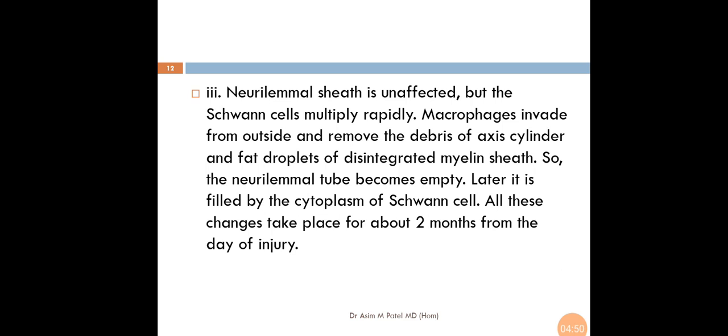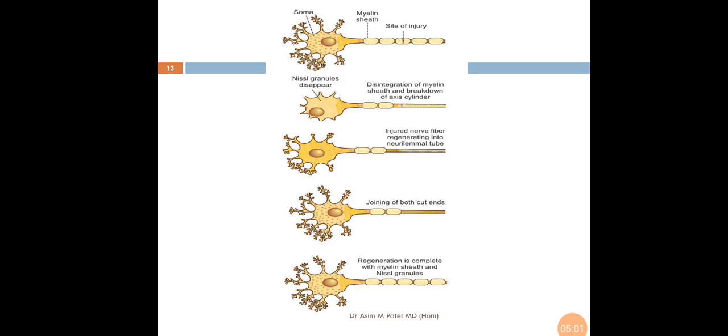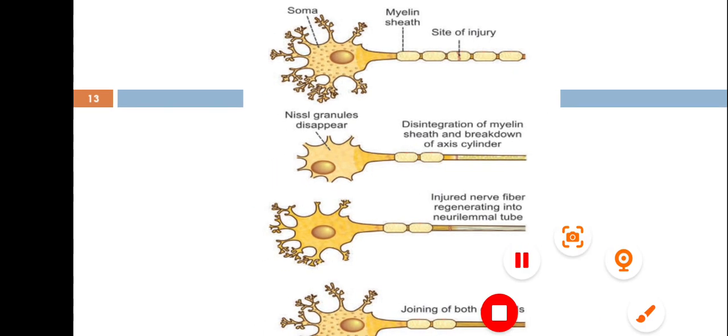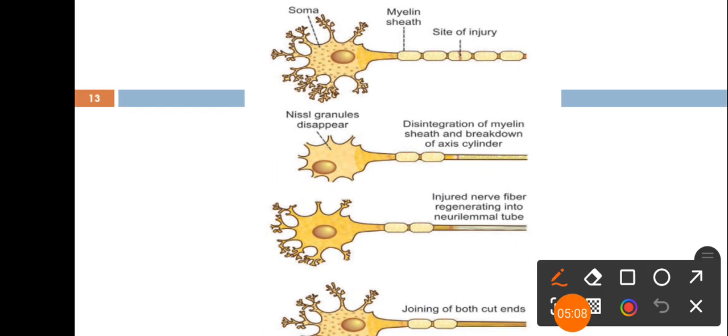The neurolemmal tube becomes empty. Later it is filled by the cytoplasm of Schwann cells. All these changes take place for about two months from the day of injury. In Wallerian degeneration, the changes which are occurring in the distal part are called Wallerian degeneration.